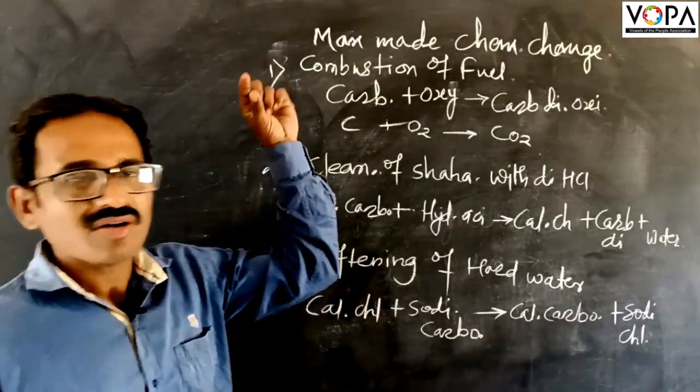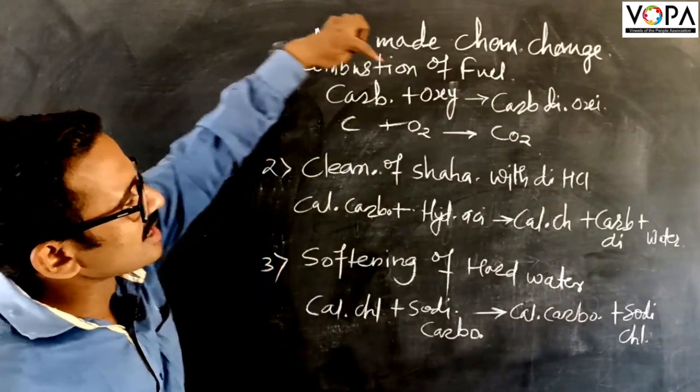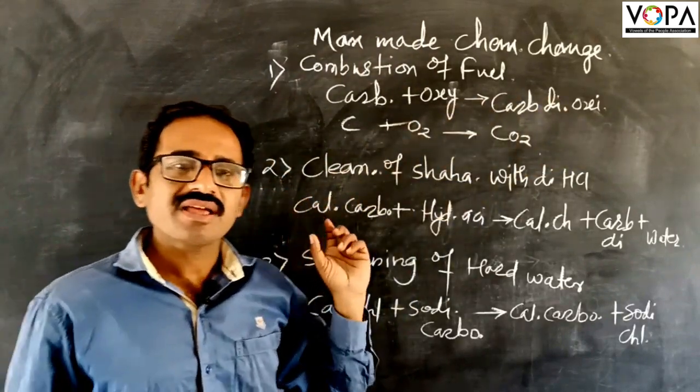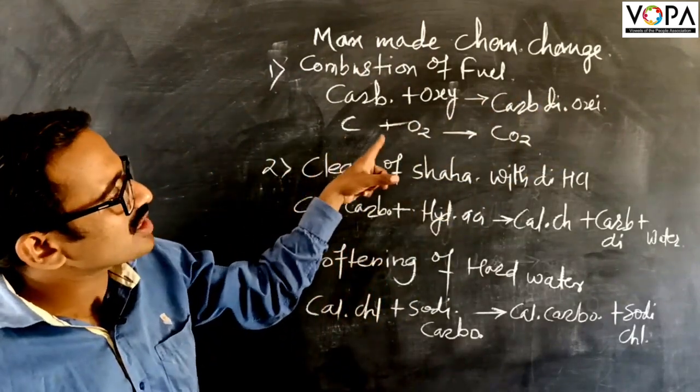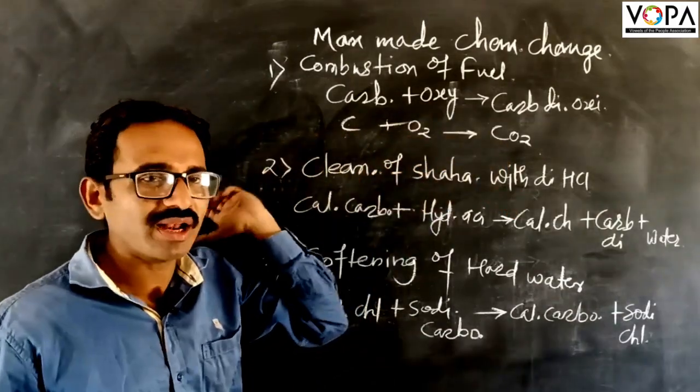The word equation for this is: carbon reacts with oxygen to form carbon dioxide. Its chemical equation is C plus O2 equals CO2. This is an irreversible process.